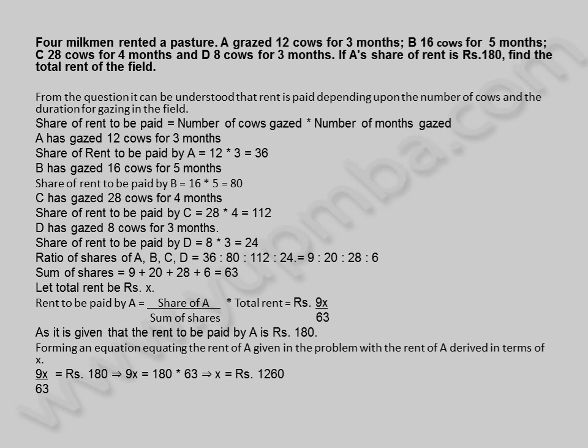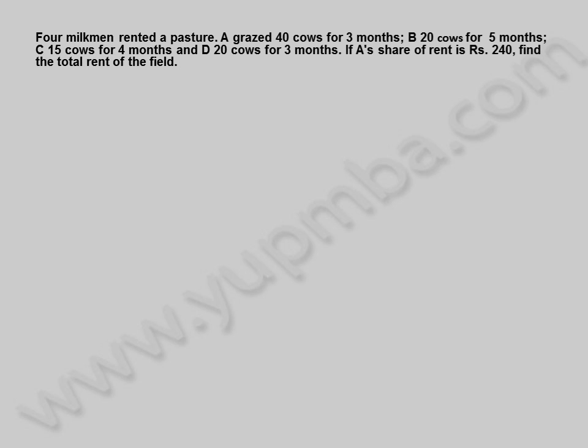This implies 9X = 180 × 63, giving X = 1,260 rupees. The total rent of the field is 1,260 rupees.